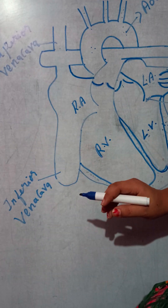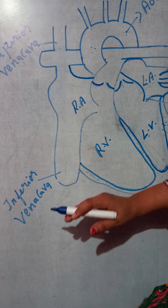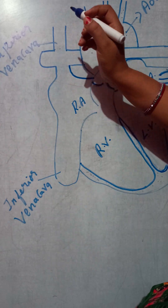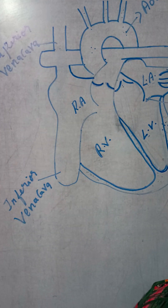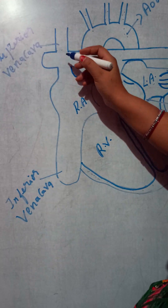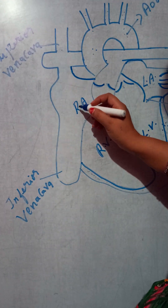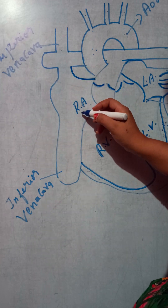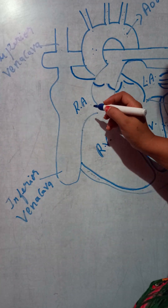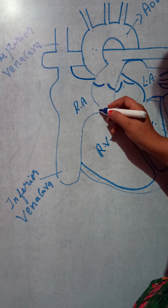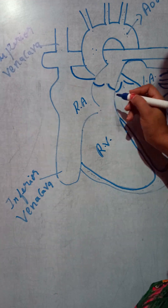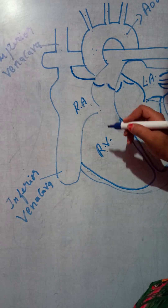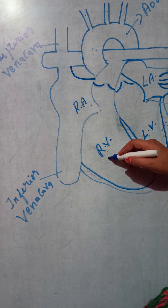The inferior vena cava collects deoxygenated blood from the lower parts and the superior vena cava collects it from the upper parts. This deoxygenated blood then moves towards the right atrium. From the right atrium, through the tricuspid valve — which is present between the right atrium and right ventricle — the deoxygenated blood moves towards the right ventricle.